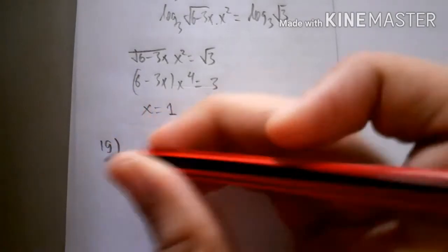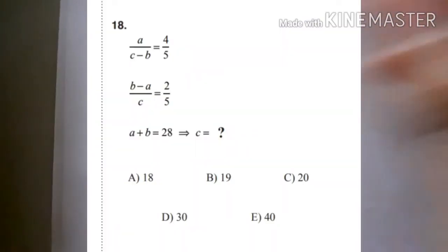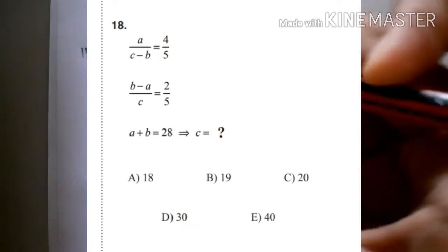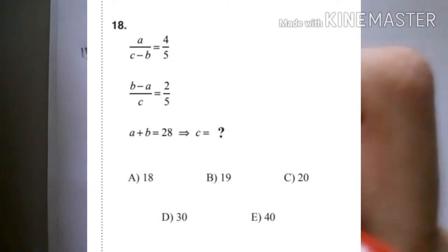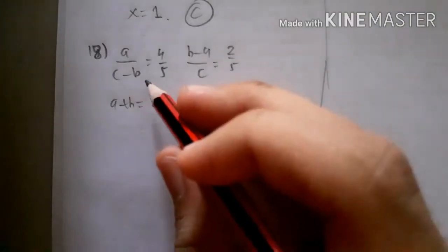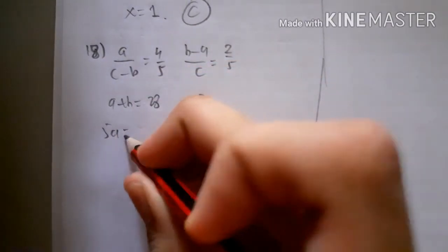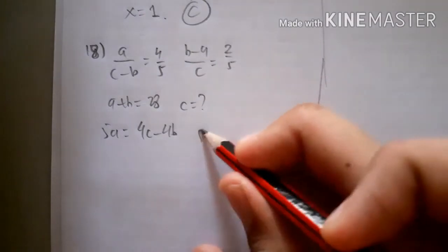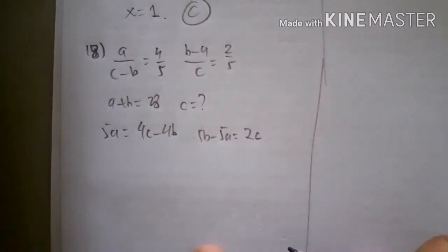For number 18: a/(c - b) = 4/5, (b - a)/c = 2/5, and a + b = 28. Find c. From the first equation: 5a = 4c - 4b. From the second: 5b - 5a = 2c.